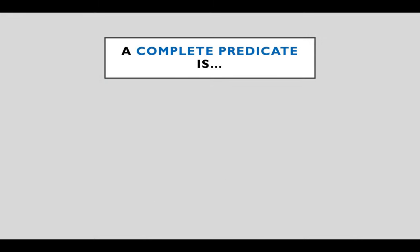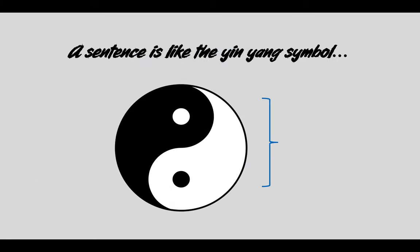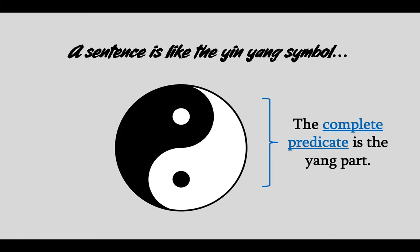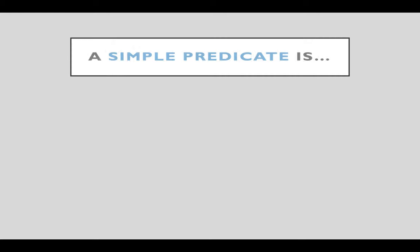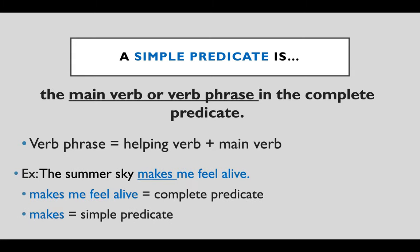A complete predicate is the verb and all the words around it. For example, the summer sky makes me feel alive — makes me feel alive is the complete predicate. A sentence is like a yin-yang symbol, and the complete predicate is the yang part. Makes is the simple predicate; makes me feel alive is the complete predicate.